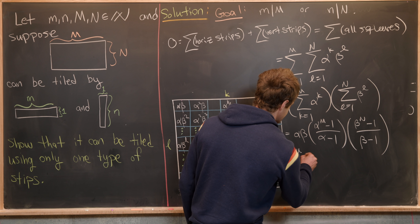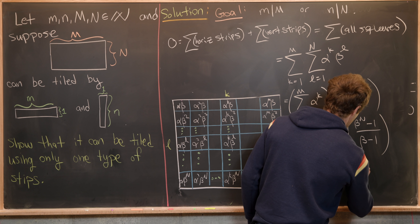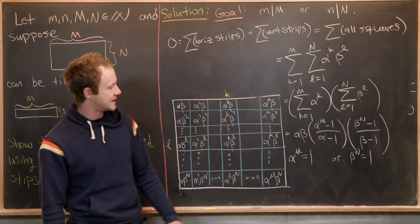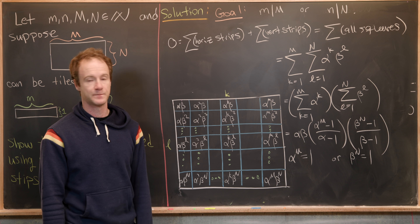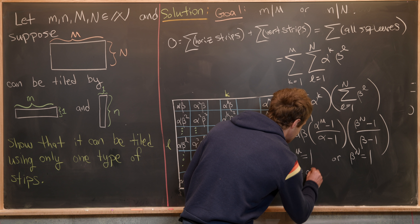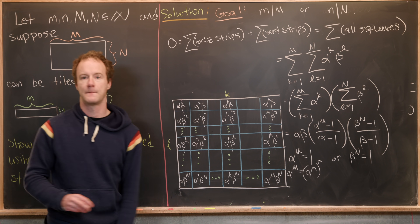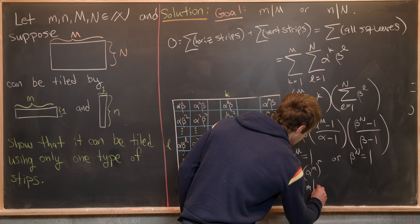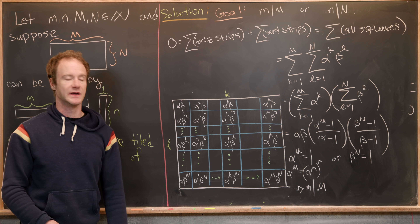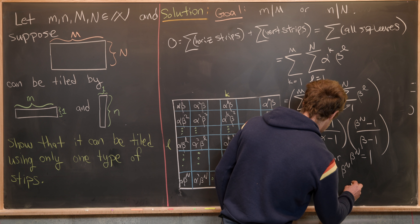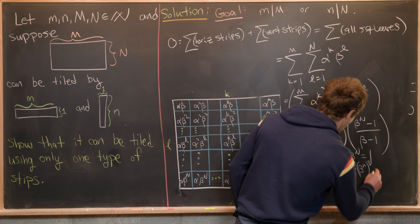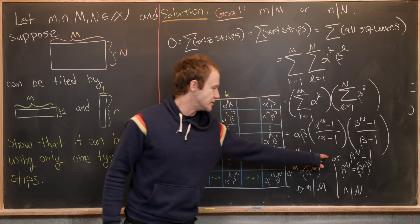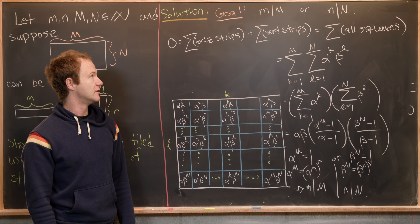So either alpha^M = 1 or beta^N = 1. From the theory of roots of unity, alpha^M = 1 means we can write alpha^M as (alpha^m)^r, which implies m times r equals capital M — in other words, little m divides capital M. Similarly, beta^N = 1 implies little n divides capital N. Either way, we get one of the statements we wanted to prove, so we're done.